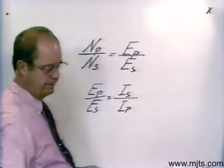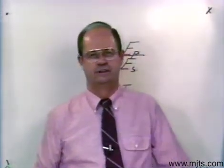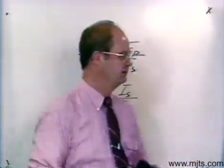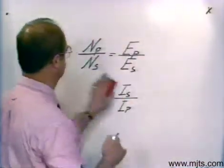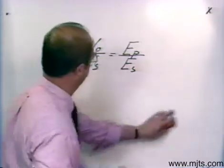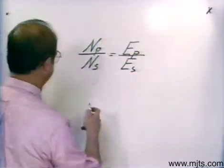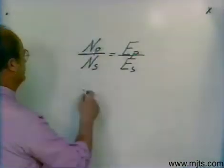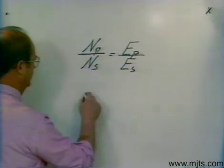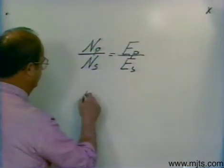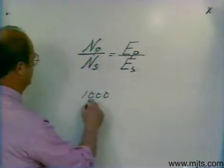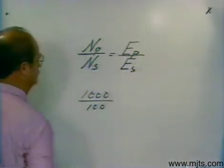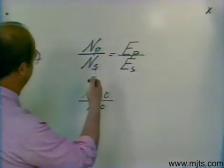Now to work a problem like this out, I would have to know three of the variables and then I could find the fourth. Now let's just take this one for an example. I'll pick out some numbers that are a little easier to work with. Let's say that my number of turns in my primary is a thousand. I've got a thousand turns in my primary and I've got one hundred turns on the secondary.